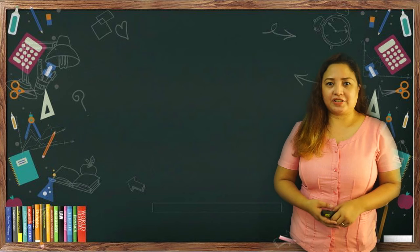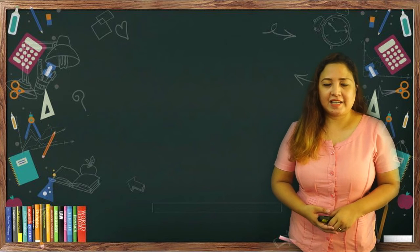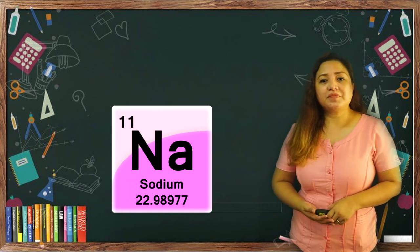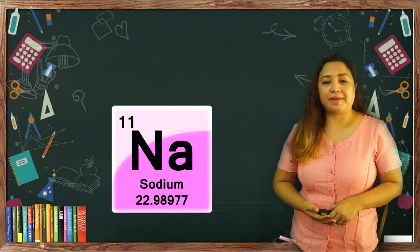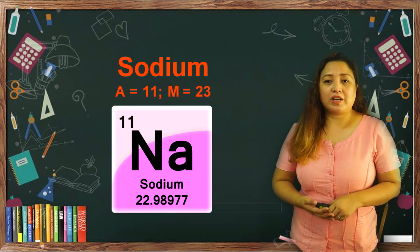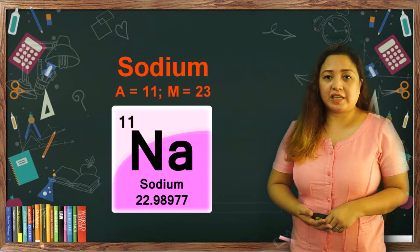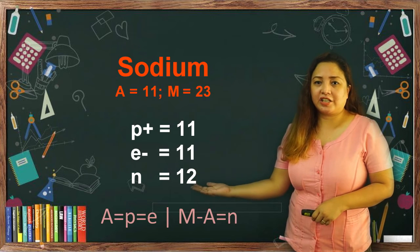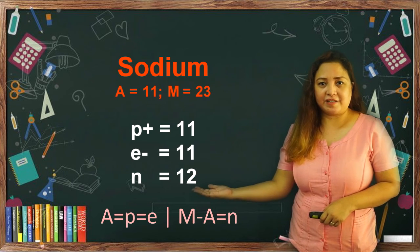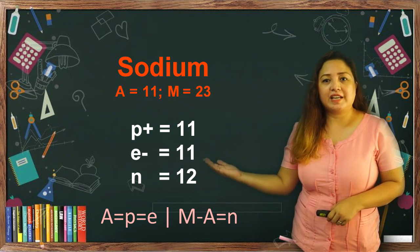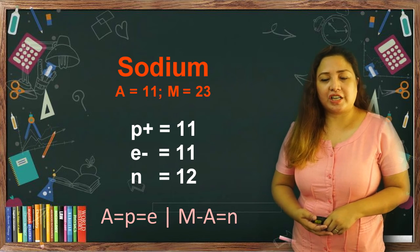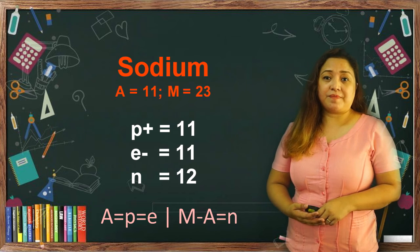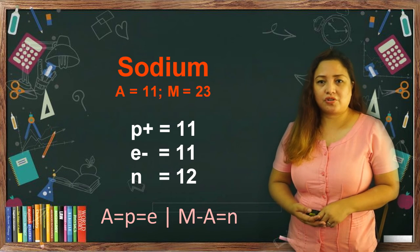Let us now check your answers. Let's have element number 1: sodium. Sodium has atomic number 11 and mass number 23. For proton and electron, both are 11 because the atomic number is 11. For the neutron number, it should be 12 because 23 minus 11 gives you 12.